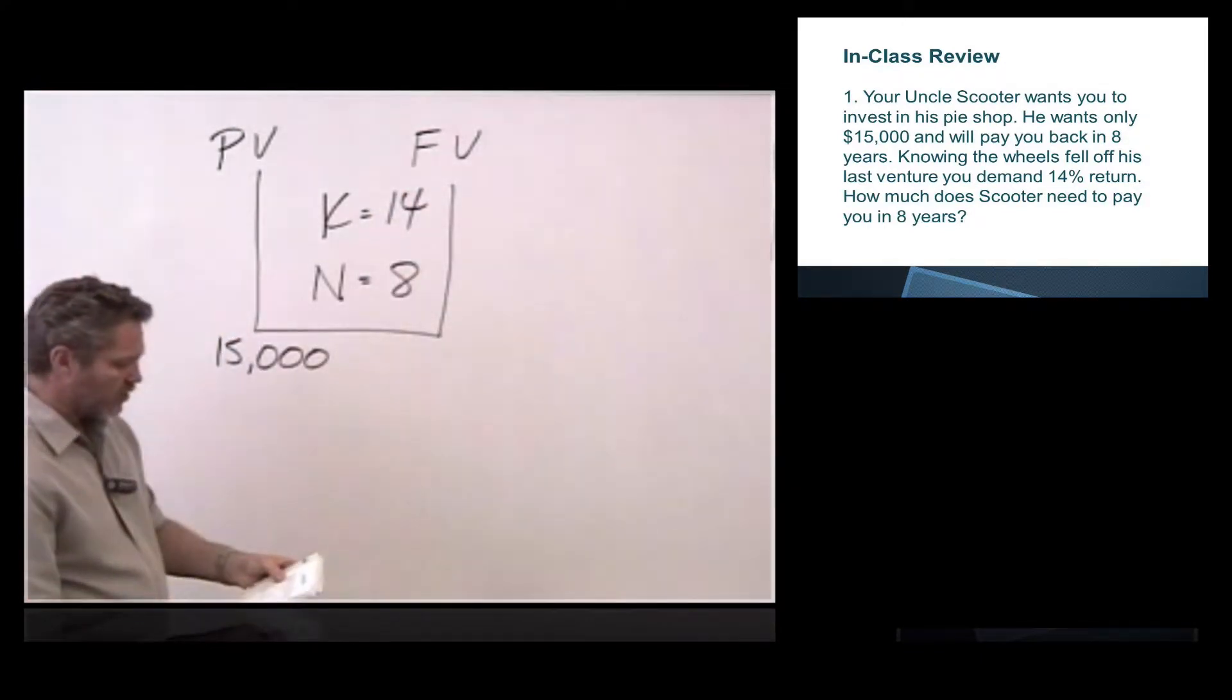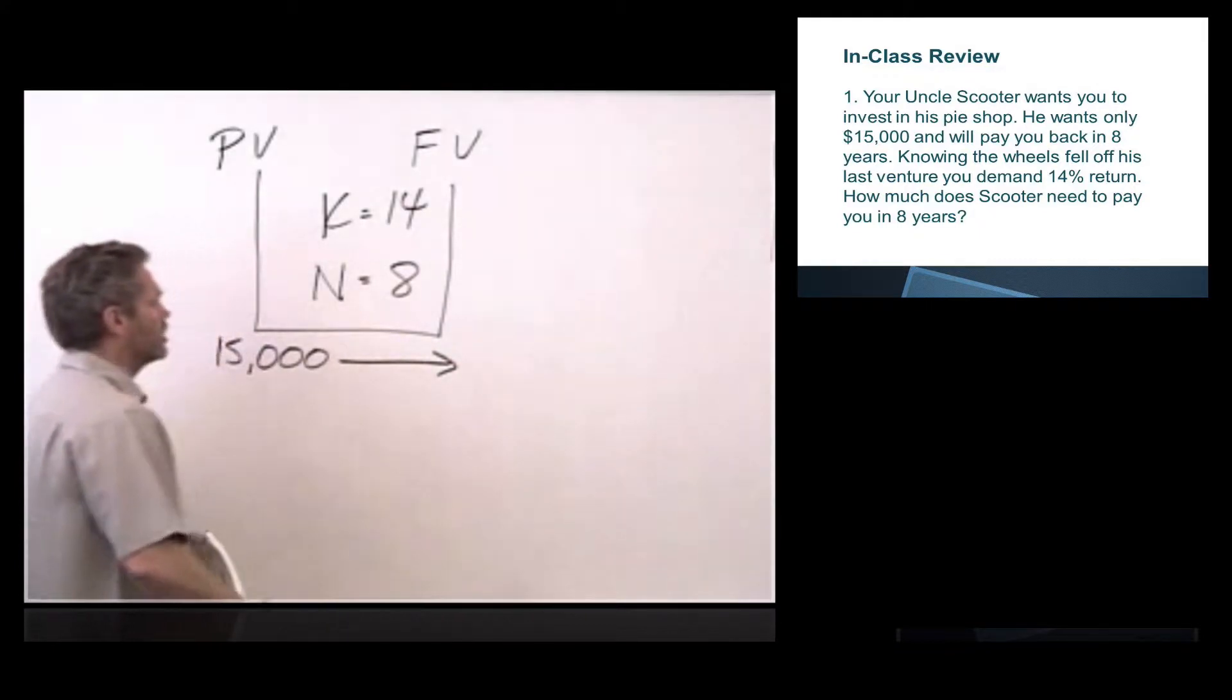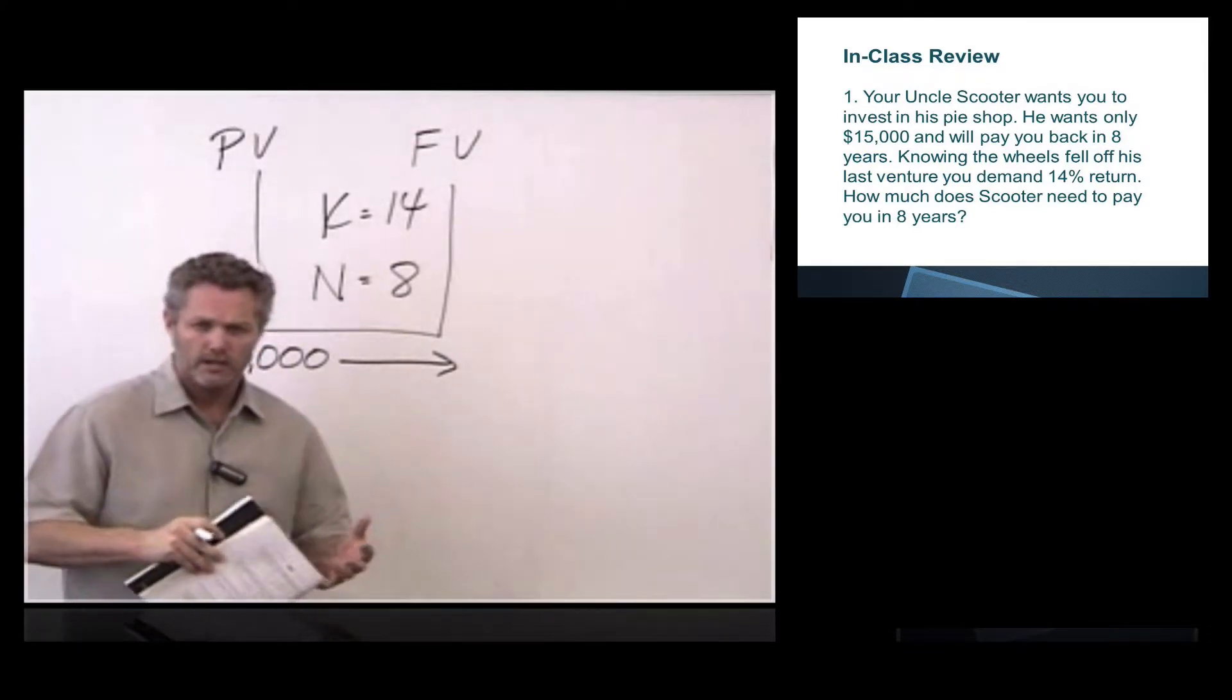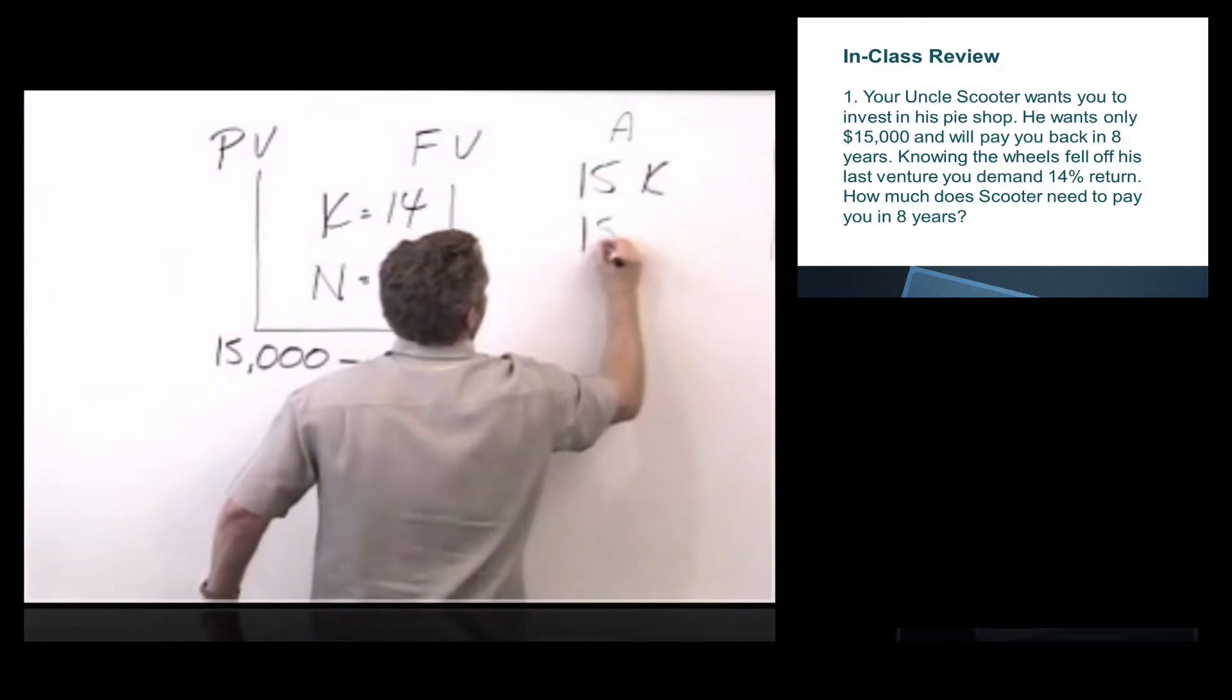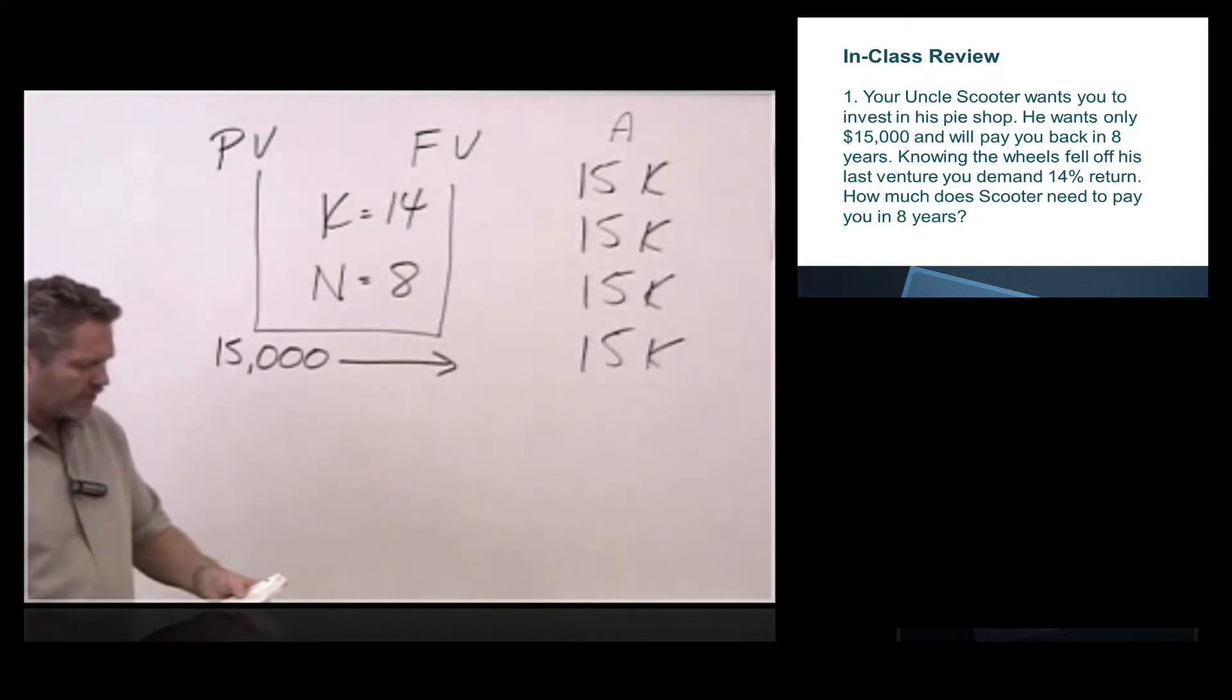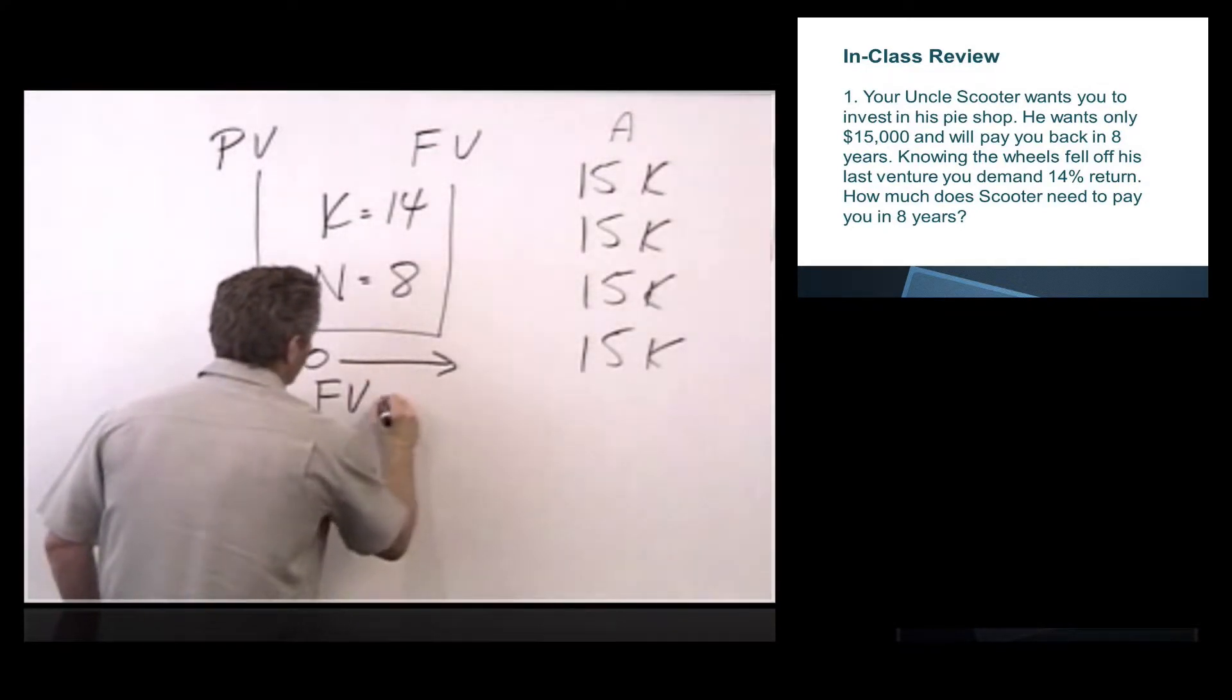And then the question is, how much does he need to pay you back in eight years? So that's clearly future value. How much in the future does he need to pay you back? Then we get to one of the table questions also. Is this what we called an annuity, which we went over earlier, or is this a lump sum? An annuity is a string of payments. So if this is an annuity, then Uncle Scooter wants $15,000 each and every year, right? That's not what the question says. It says he wants $15,000, so that's a one payment. If it was several payments, it would say he wants only $15,000 each year. It's a one-time payment.